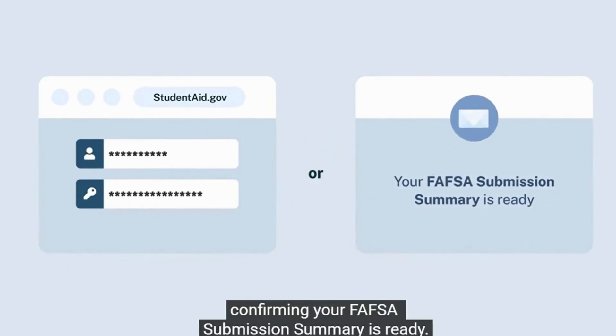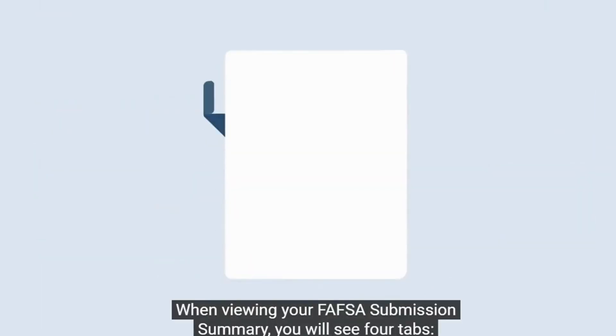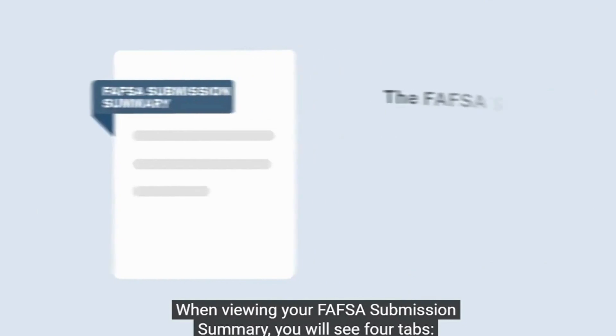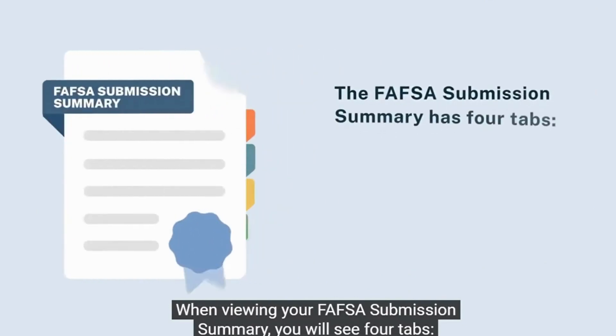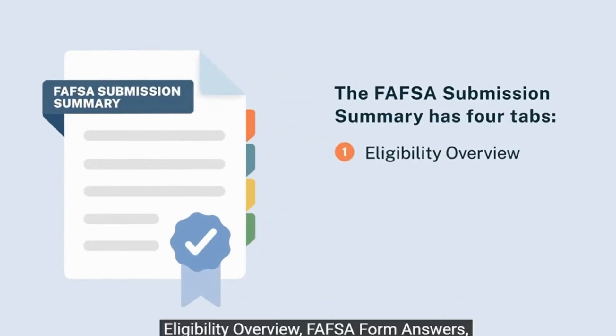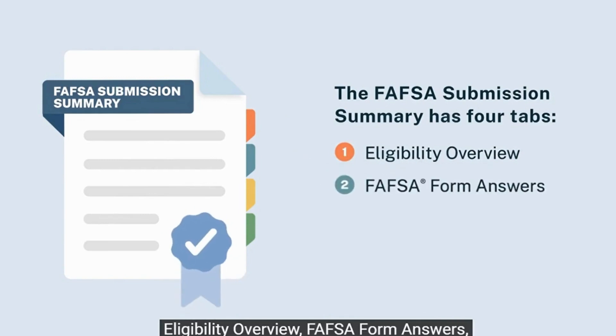When viewing your FAFSA submission summary, you will see four tabs: Eligibility Overview, FAFSA form answers, school information, and next steps.